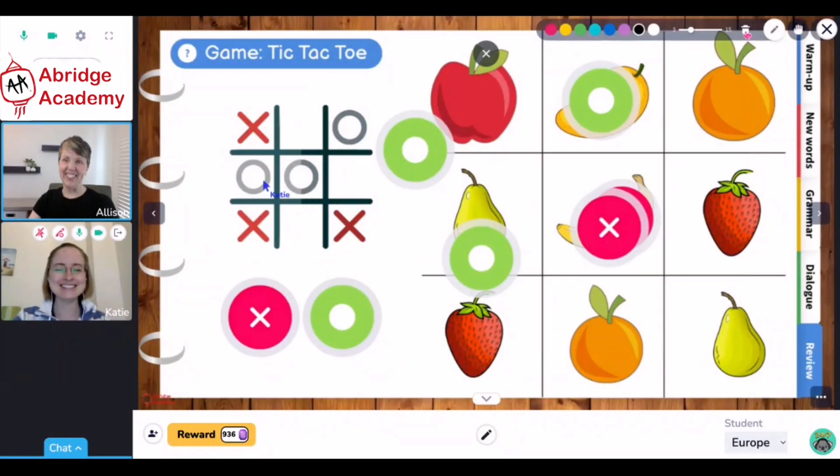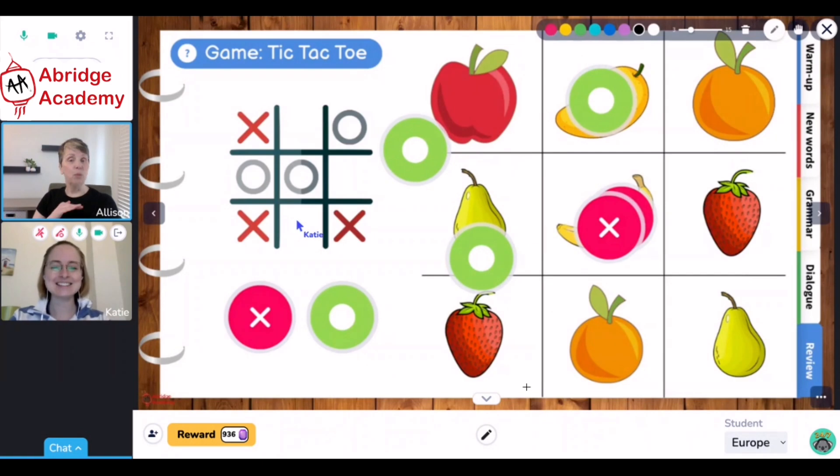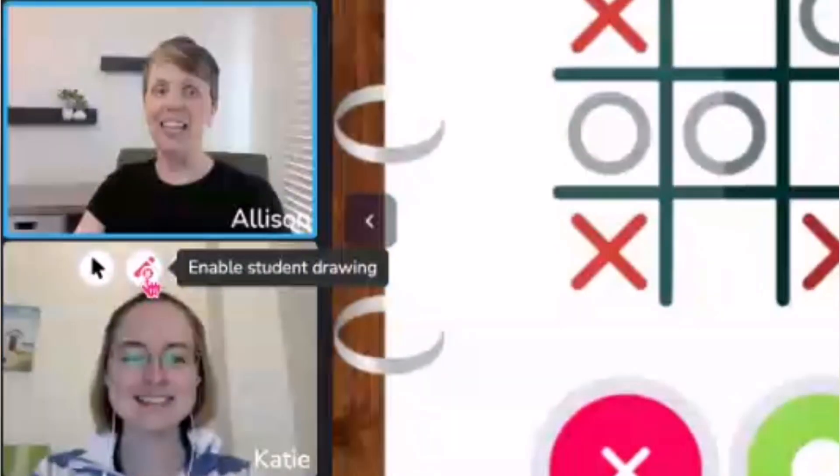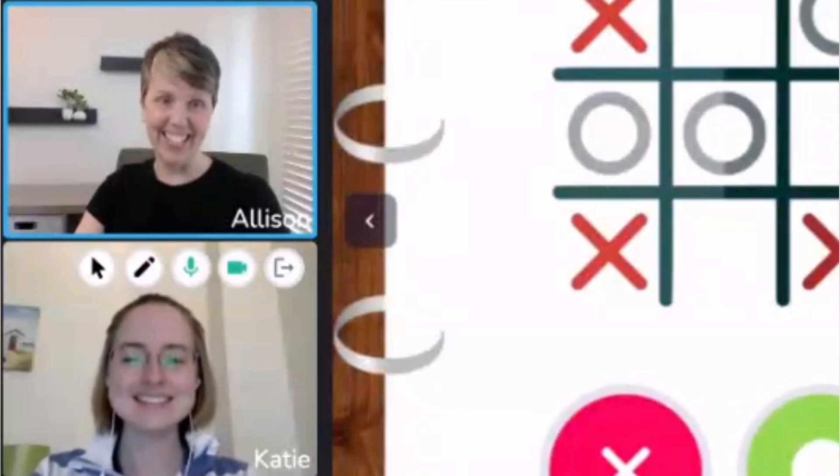So now I can clear off the screen. She cannot move any items. She can't draw on there. We'll have a quick little chat about how we behave in class and then we'll give her her controls back so that she can play the games just like everyone else does.